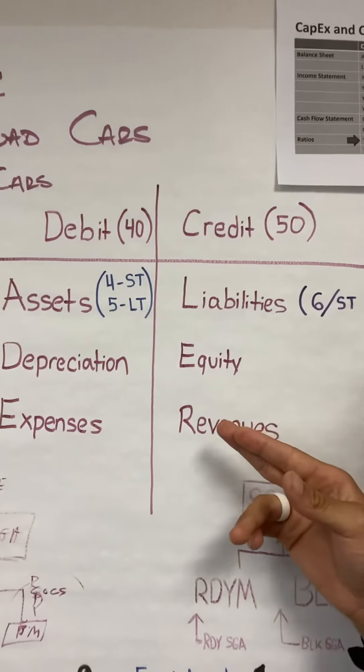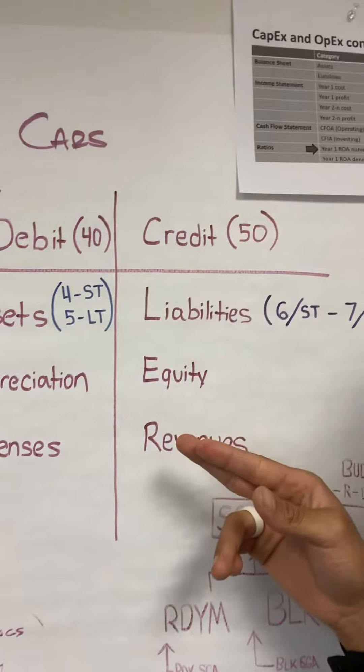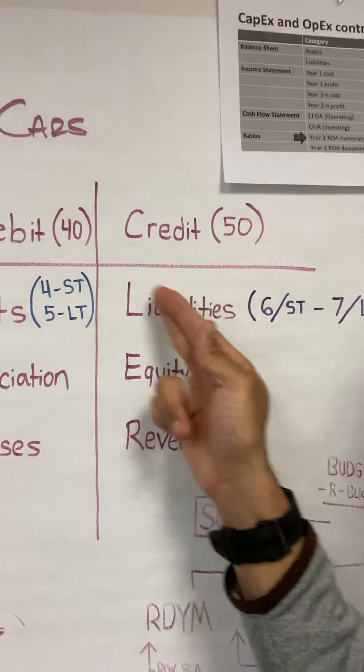So for example, if you have a simple bank problem where they say the company borrows $10,000, we start here. Our liabilities are going to go up by $10,000, and we end here.